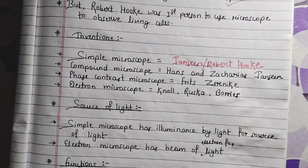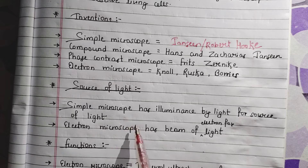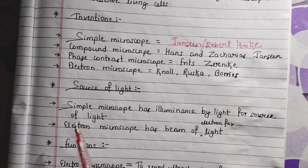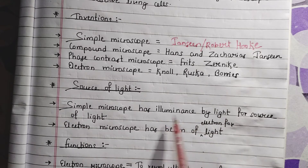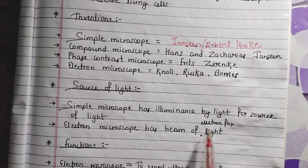Now let's look at the source of light for each microscope — this is also asked frequently. The simple microscope uses light as its source of illumination. The compound microscope also uses light. But for the electron microscope, a beam of electrons produces the light. This difference between light microscope and electron microscope is very important to remember.